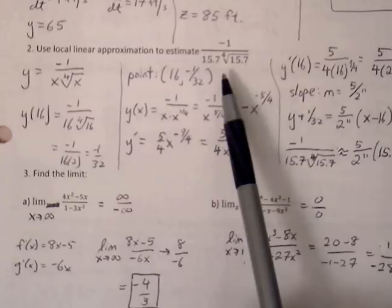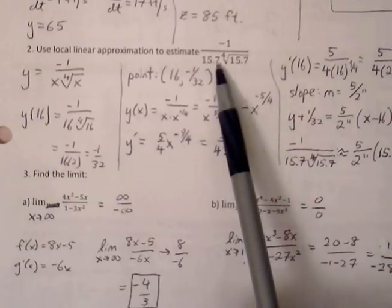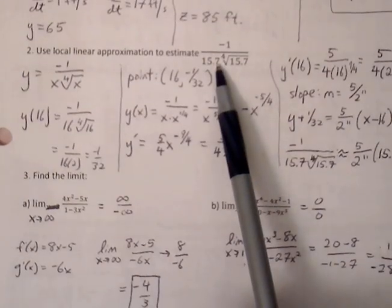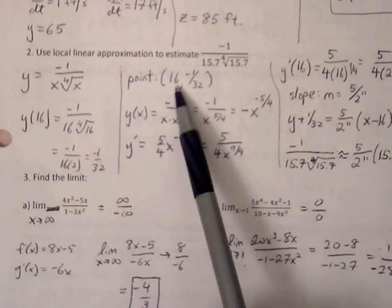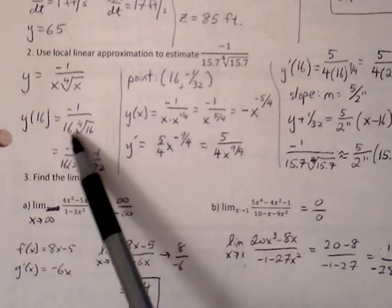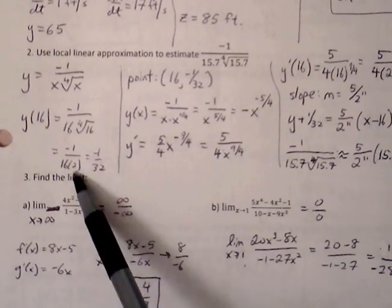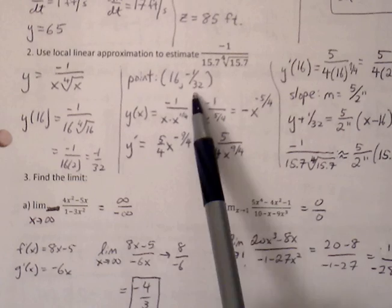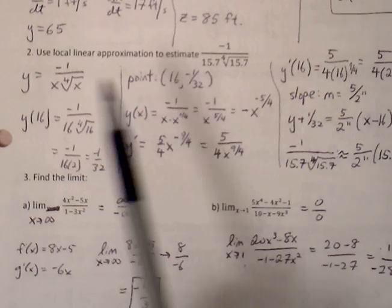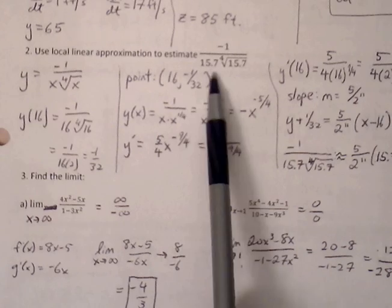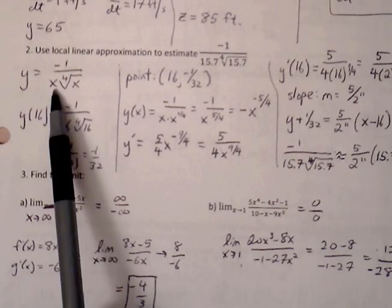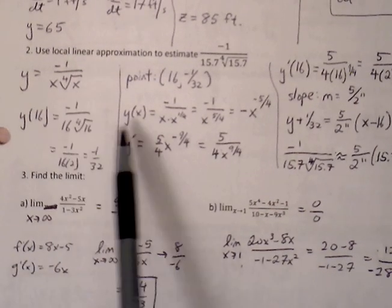We want to find next the ordered pair so choose the nearest integer value which is 16. Plug 16 into the original function: negative one over 16 times the fourth root of 16, 16 times 2 is 32, so we have our ordered pair (16, -1/32). Next step is to find the derivative so that we can find the slope. To find the derivative we need to set this up.